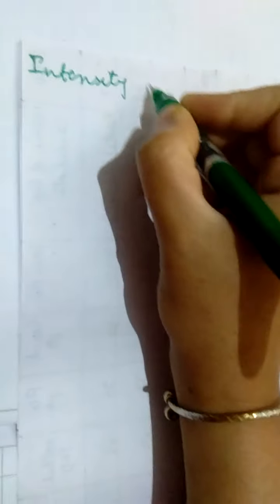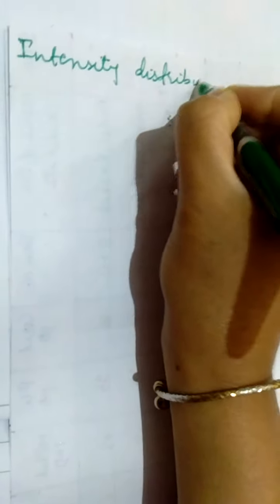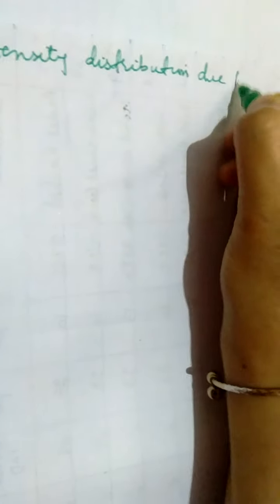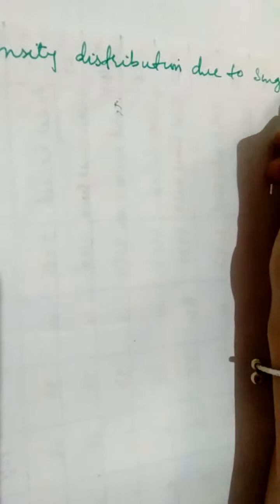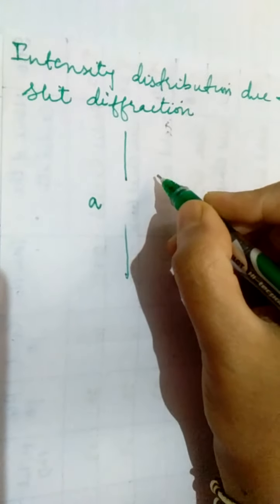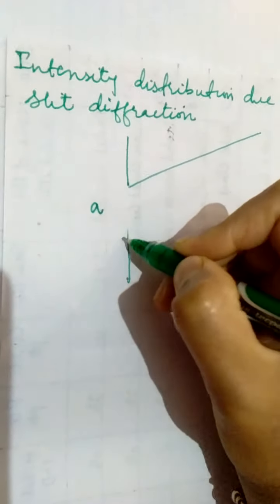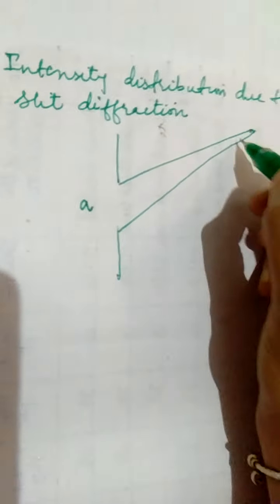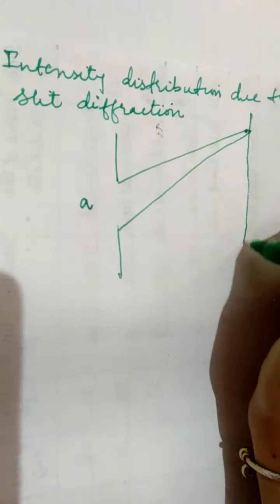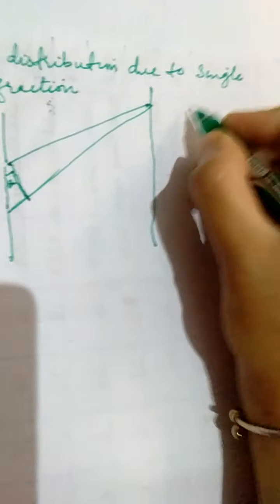Today we are going to discuss intensity distribution due to single slit diffraction. This was the slit of certain width say a. You have already learned in the previous video that the path difference was calculated in this manner — suppose this was the point B on the screen, and these are two rays from the two edges of the slit. The path difference was found by drawing a perpendicular.